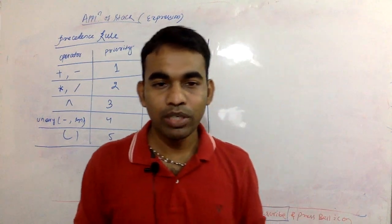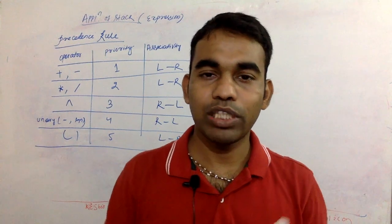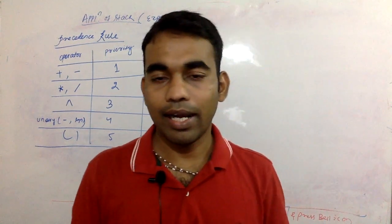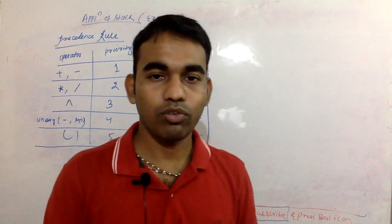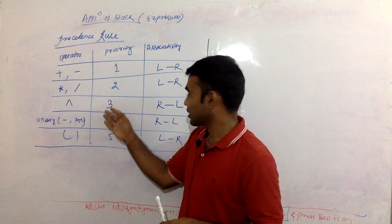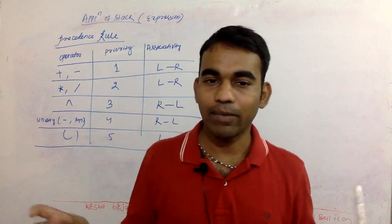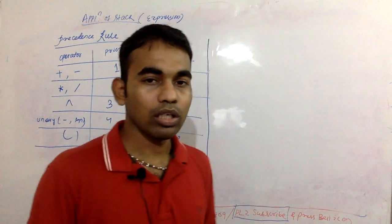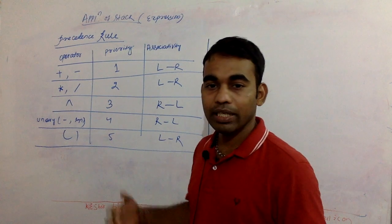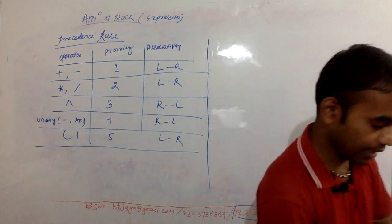If you are new to this channel, please subscribe and press the bell icon, and don't forget to share with your friends. Now let's understand this table I have drawn, which shows the precedence rules of different operators. I think we already know about these things, but let's do some simple examples so we get clarity.